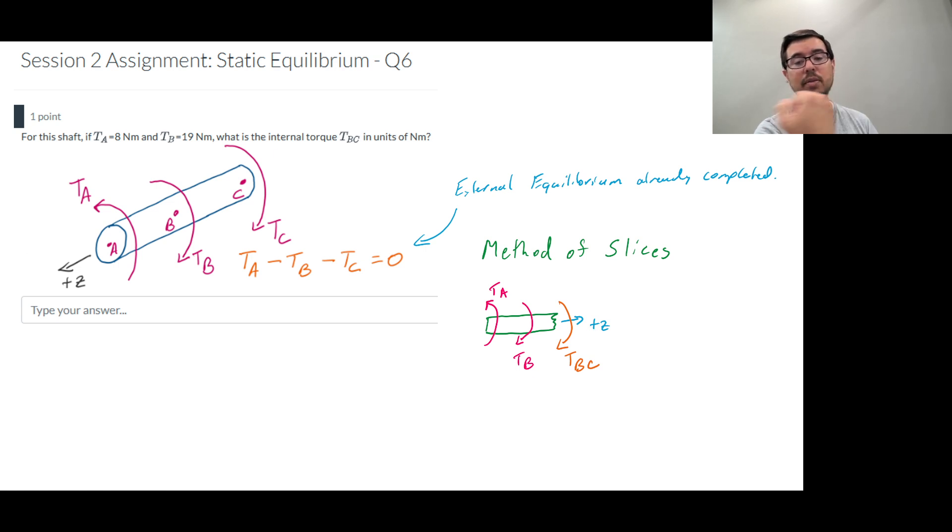So to define an internal torque following this convention we look and say okay I'm using the right hand rule around that and coming out. So TBC is defined as being positive in this orientation. If I were looking at it from the A side, this TBC would be in the same direction as TC and it would be in the clockwise direction if I'm looking down it.